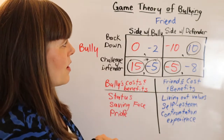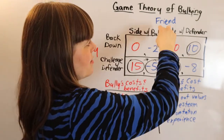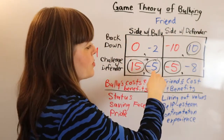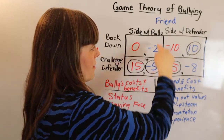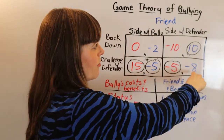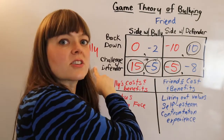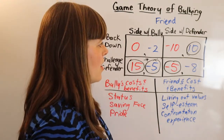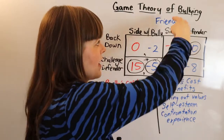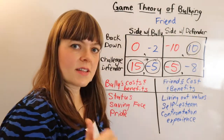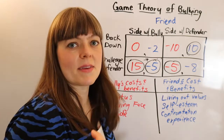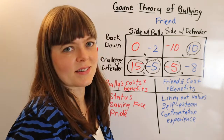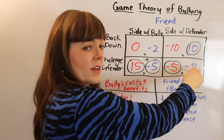Now we want to change this — we'd like the friend to side with the defender. The friend chose siding with the bully over the defender in the case where the bully challenges, and one key motive is fear of confrontation: fear of being bullied themselves if they side with the defender. So if we can reduce fear of confrontation — maybe through assertiveness training, positive peer pressure, or other factors — we can increase the utility of siding with the defender when the bully challenges.